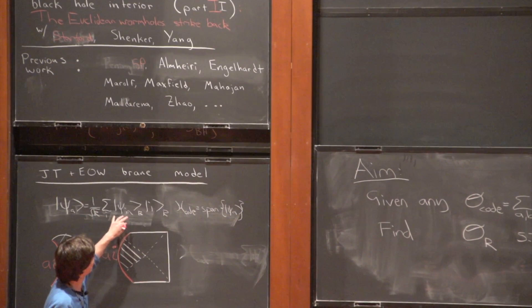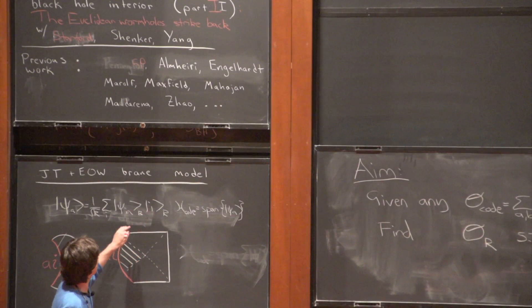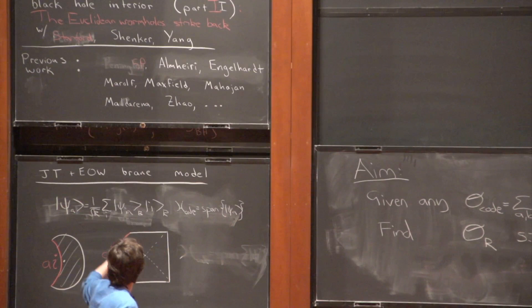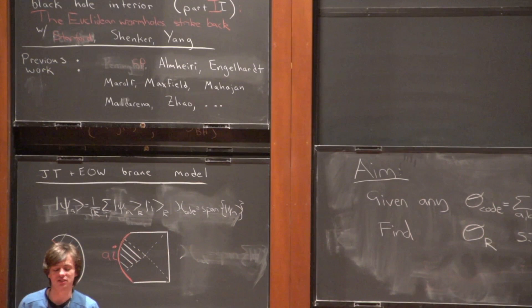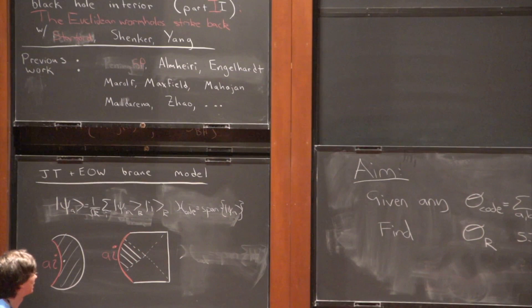We're going to consider states where before we just had a maximally entangled sum over Ψ_i — where i was the state of the black hole with the end-of-the-world brane in state i, entangled with the reference system in state i — now the black hole is described by both i and A. This gives us an entire code space of different states, spanned by states Ψ_a, where we have the end-of-the-world brane in state i on the original degrees of freedom and state a on the extra degrees of freedom. You can do much more general things than that, and we do in the paper.